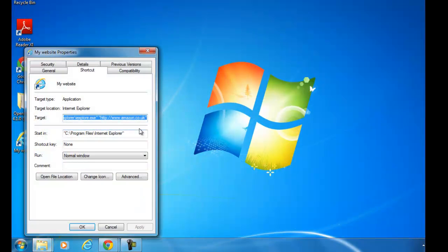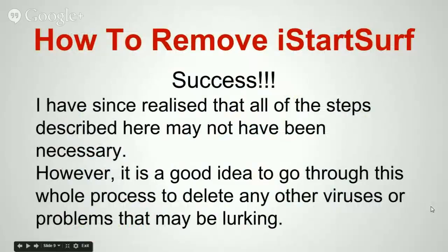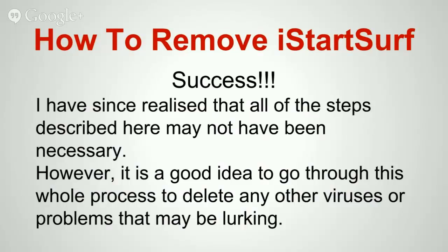So check all your shortcut properties and take off anything after the .exe - go to the end, remove it, apply and OK. I found that actually solved the problem better than any of the other solutions. Not all of those steps may have been necessary once I realized the shortcut properties seem to solve the problem, but I left all the steps in because it's a good idea to go through the whole process to clear out any other viruses or problems that may be lurking. Malwarebytes and Spybot are excellent programs for doing just that.